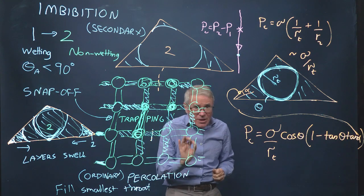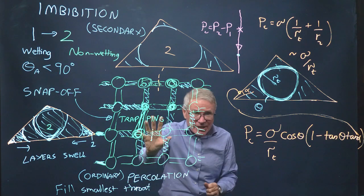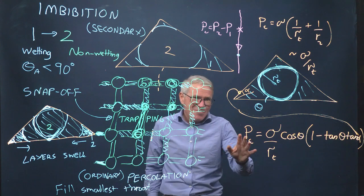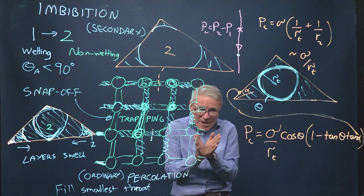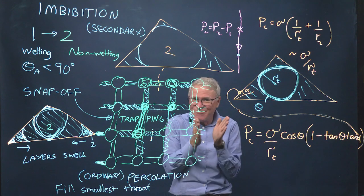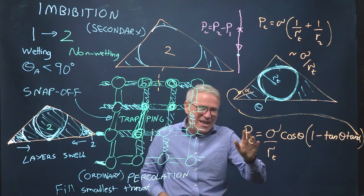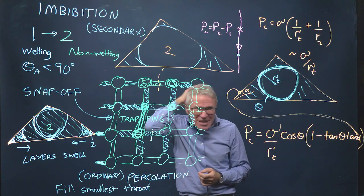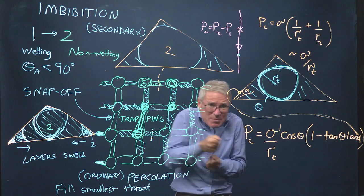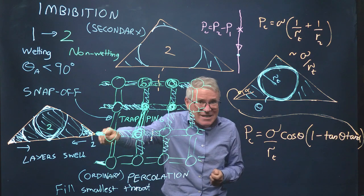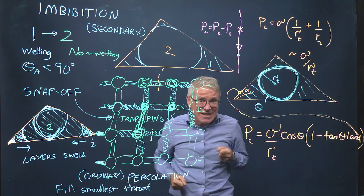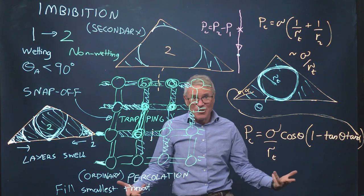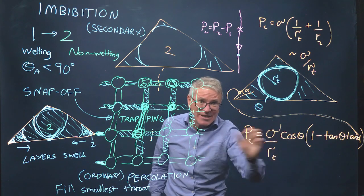So snap-off does occur and it does lead to trapping — that is significant. But the capillary pressures at which it occurs, unless you have a really wetting phase and really sharp corners, are really very low. So the question may be: isn't there another process that could occur, something that is piston-like? And of course that has to come from the inlet, which means it has to go through the pores. So the next thing we're going to talk about is how we fill the pores and how that relates to this.